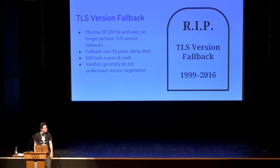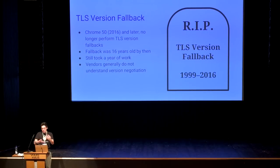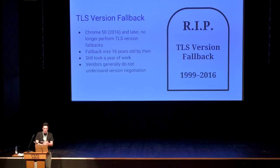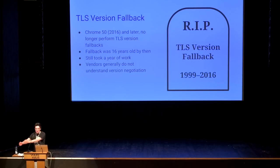Happily, this is gone. Chrome no longer performs TLS version fallbacks as of 2016. The fallback was 16-17 years old, and removing it still took a year of fixing up metrics, yelling at people whose sites were broken, dealing with bugs the fallback had masked, and lots and lots of angry users. We also learned that vendors don't really understand version negotiation. The conversation would usually go: 'Your product is TLS 1.2 intolerant, please fix this.' Response: 'Oh, we'll implement TLS 1.2 in the next version.' But that's not the bug — the bug is that you're not computing the minimum of 16-bit integers. So you're just going to cause us problems in TLS 1.3, and then you'll fix that by implementing 1.3, and then 1.4 will be painful, and this cycle never ends.